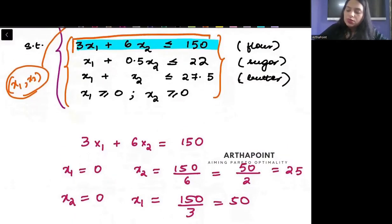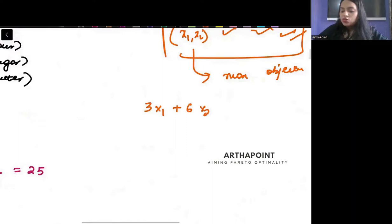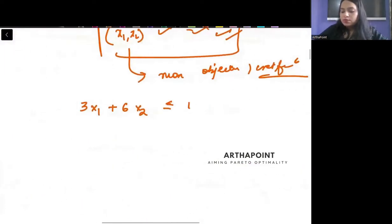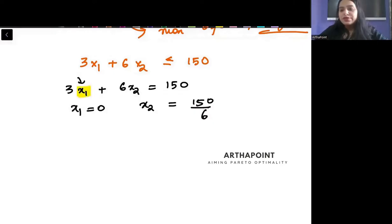Take the first equation. We need to plot this equation. What is the equation saying? 3x1 plus 6x2 less than equal to 140. So what will I do? I will convert this into an equality constraint. 3x1 plus 6x2 is equal to 150. Then I will put x1 as 0. When my x1 will be 0, what will be the value of x2? x2 will be 150 divided by 6, which is 25.